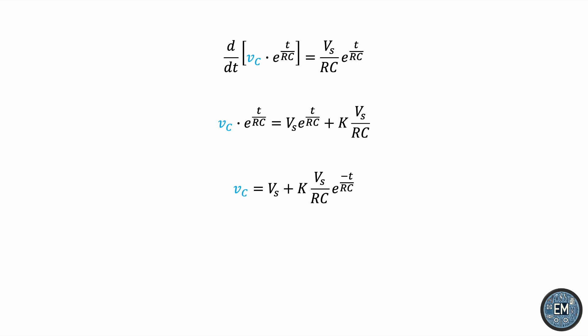To find it, let's assume an initial condition. Say VC(0) = 0. What this means physically is that we're assuming the capacitor is initially uncharged, and by initially I mean at the moment the circuit is switched on.